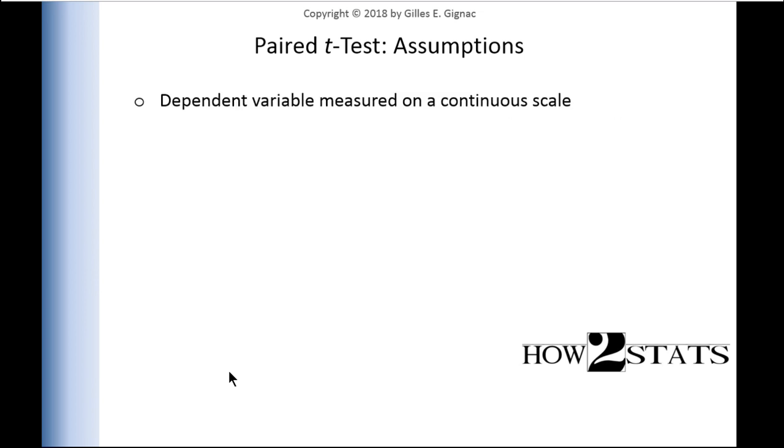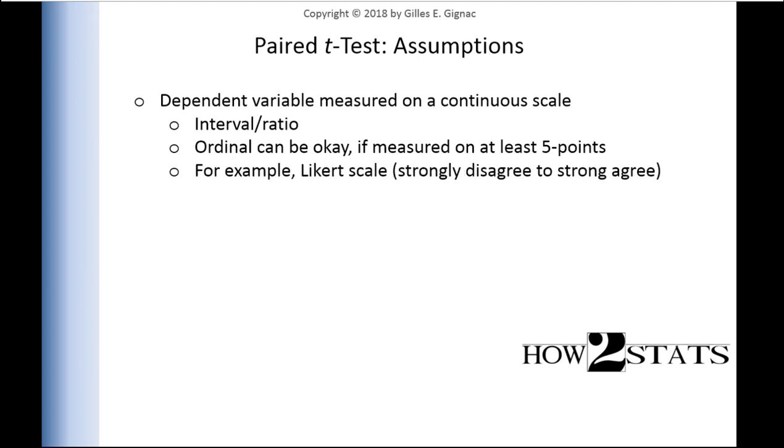Another assumption is dependent variable measured on a continuous scale. We expect theoretically interval ratio data, which I've described at length in a previous chapter. But ordinal can be okay too, I mentioned in the textbook. This is a little bit controversial because some people would disagree, but there certainly is empirical evidence to support the notion that as long as your data have at least five points, like a Likert scale from strongly disagree to strongly agree, then the paired sample t-test will probably give you a p-value that is accurate.